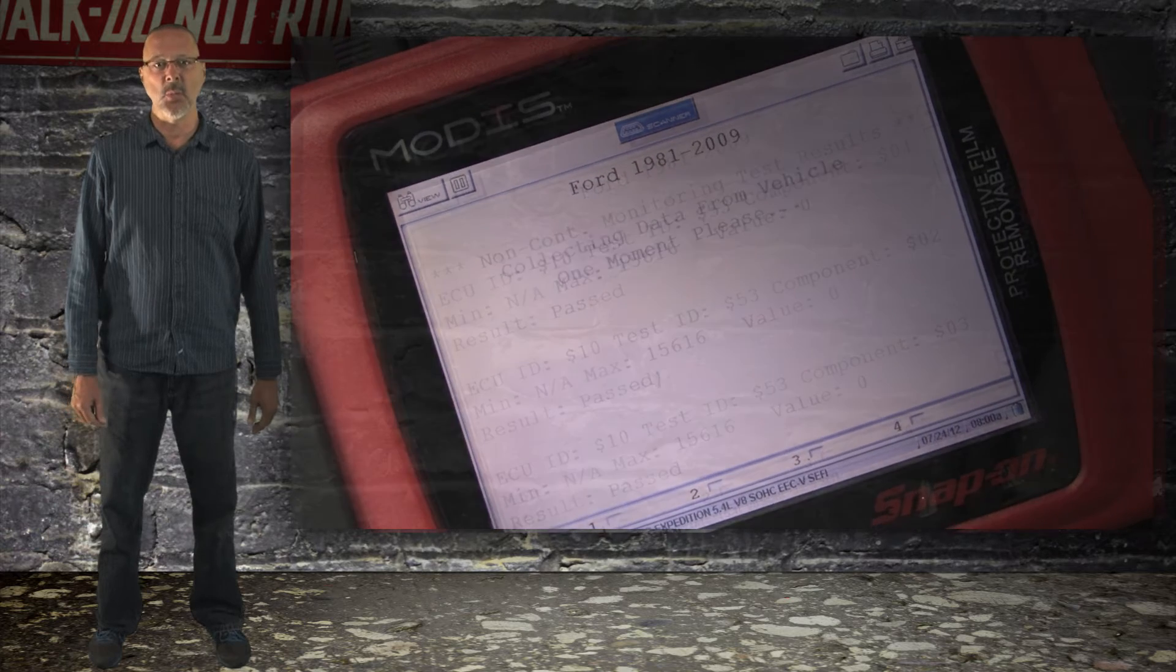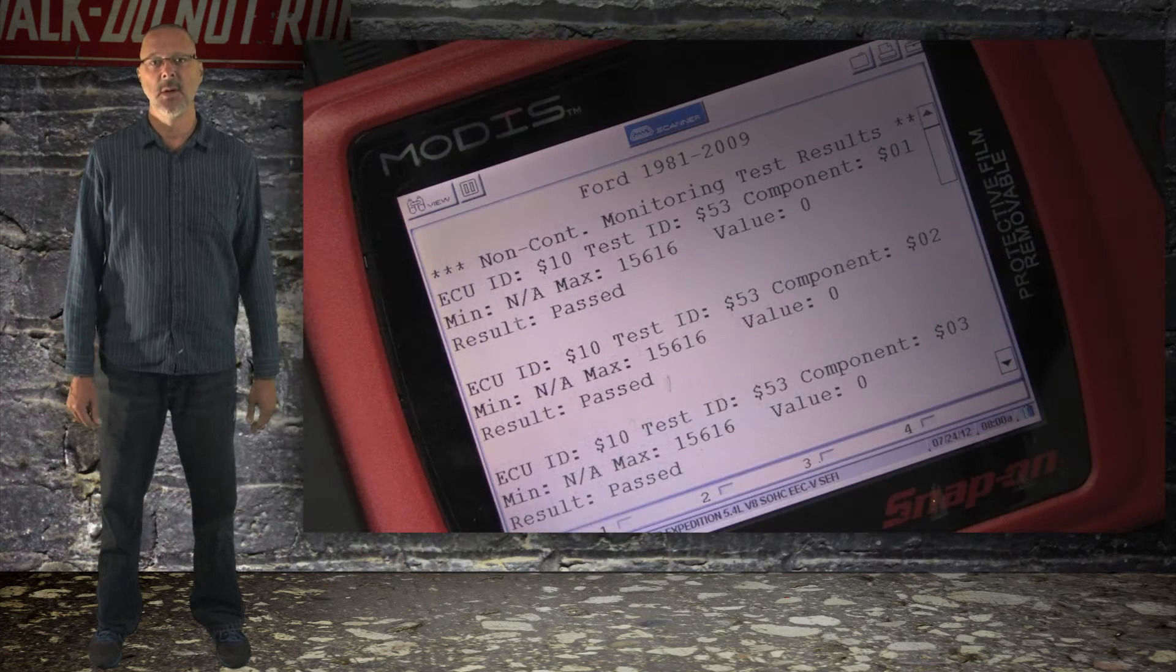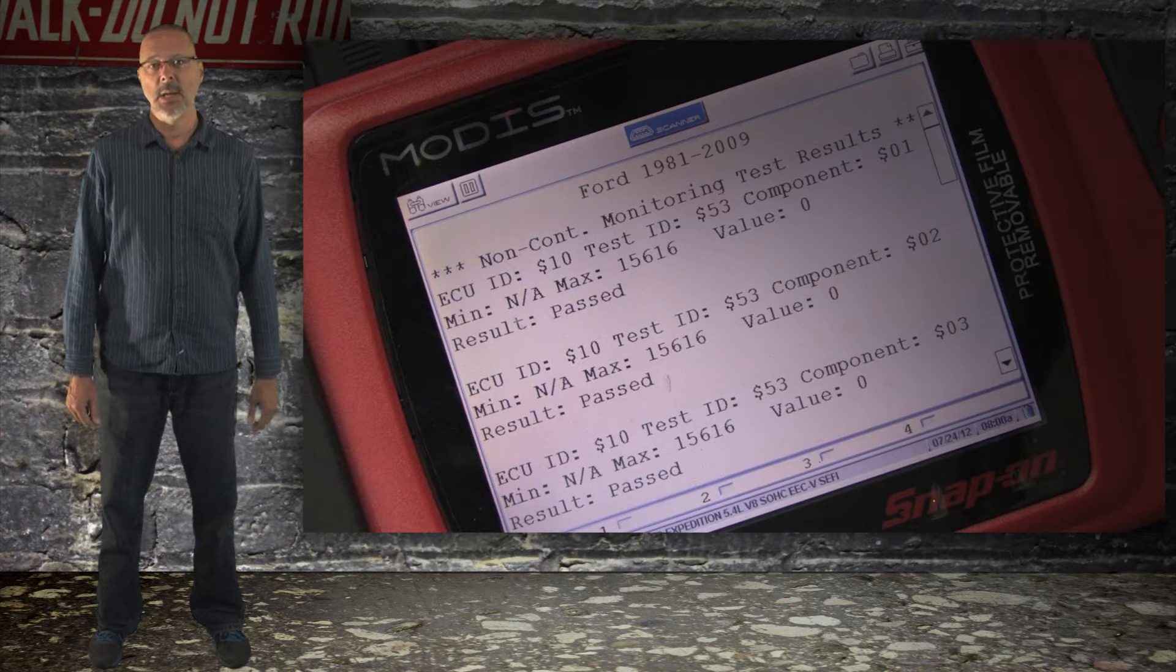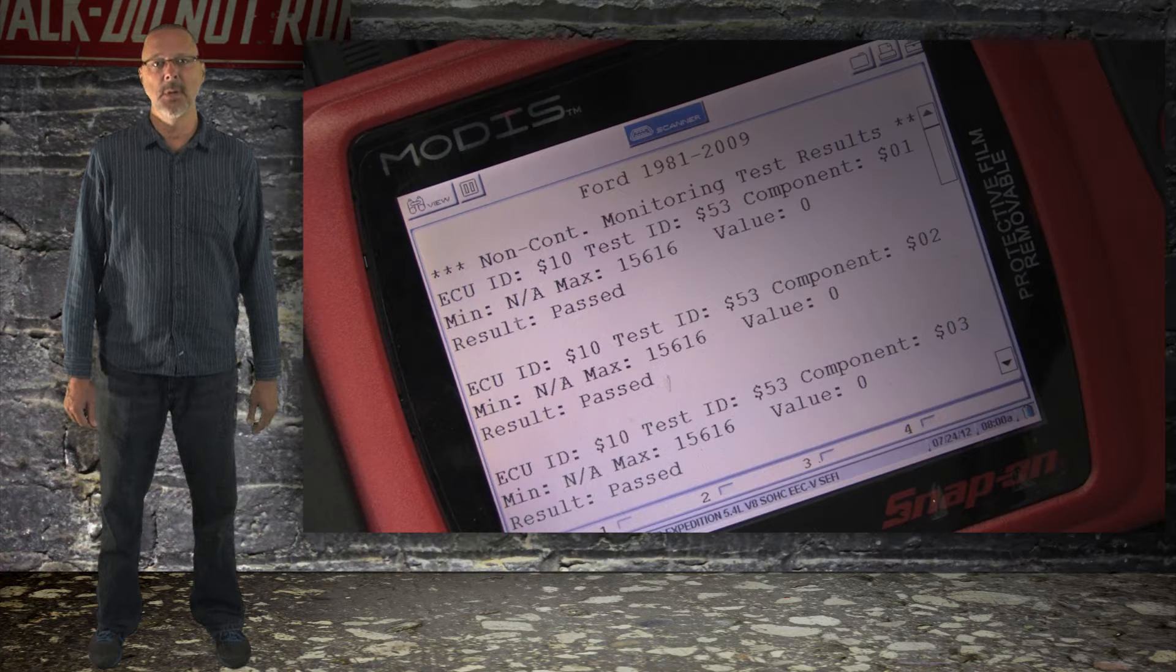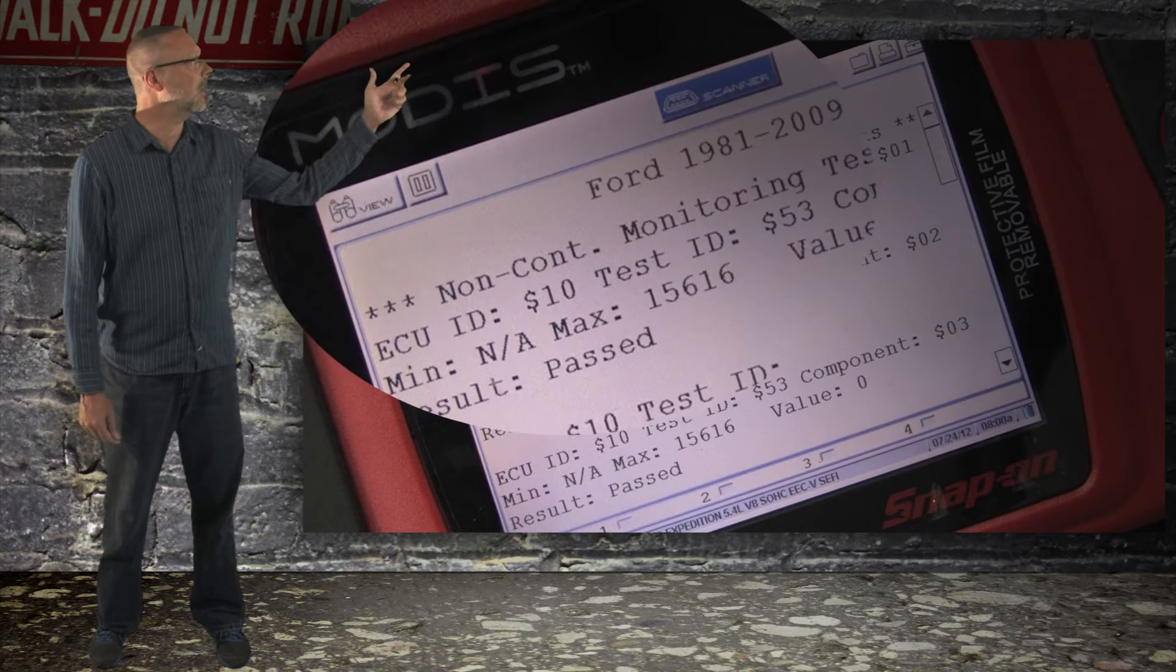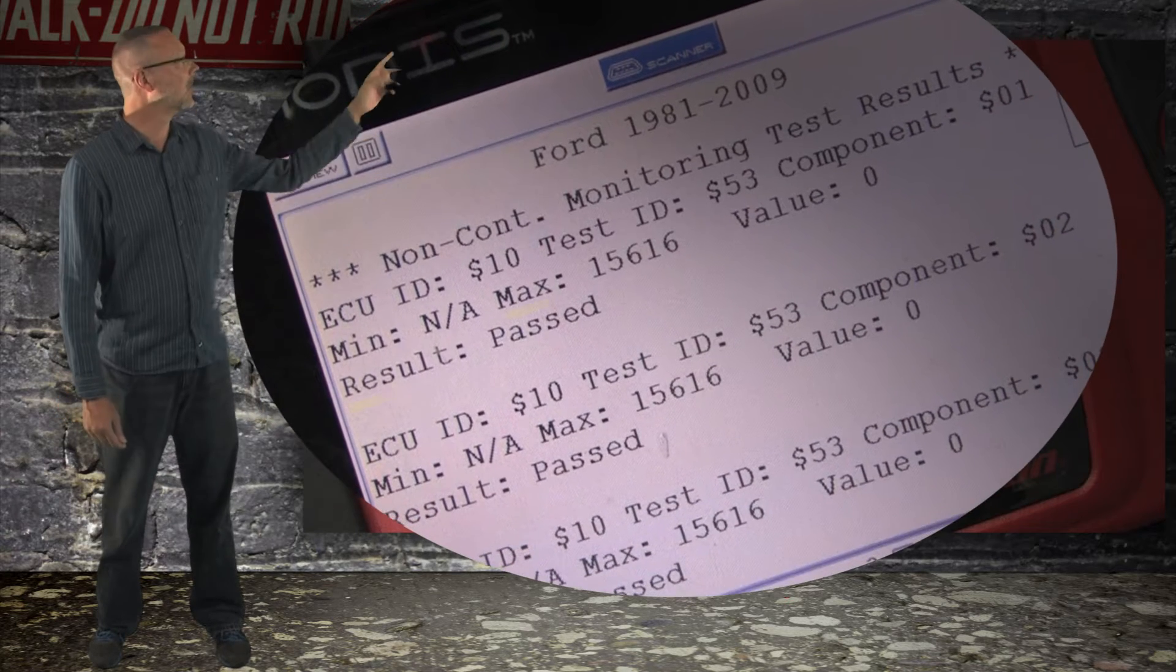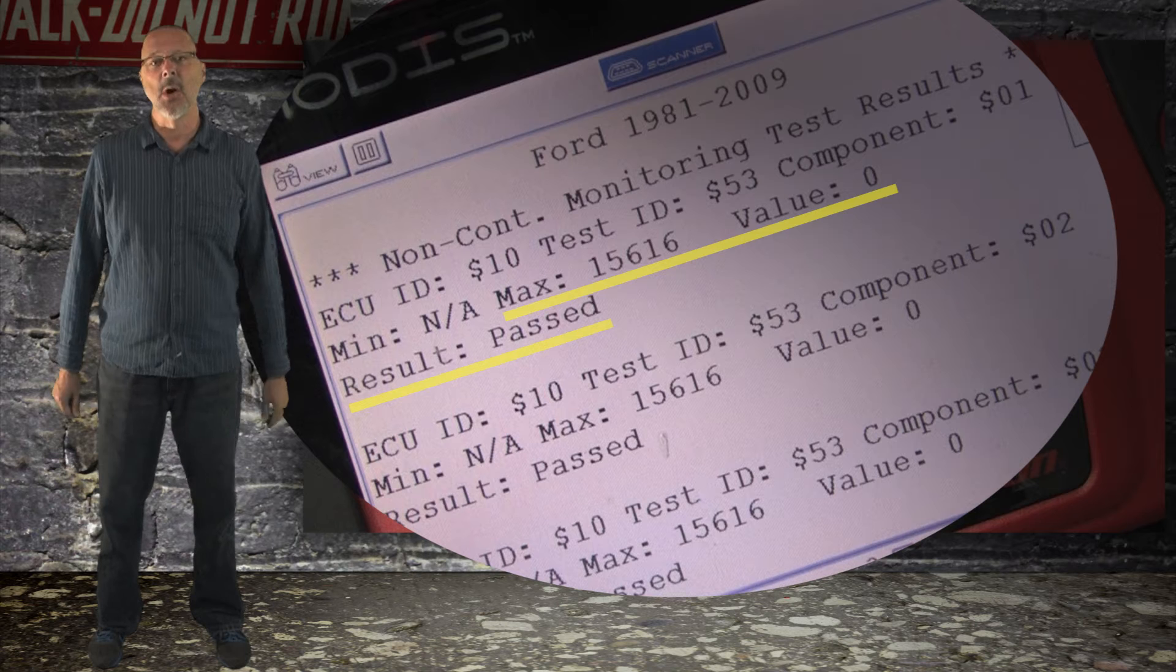This can be confusing because it really is a continuous monitor. Ford thought it was important enough to see misfire so they put it in here. The dollar sign is just signifying a hexadecimal number. Here you can see the ECU ID and test ID, but we are mainly concerned with the component MAX, value, and result readings.